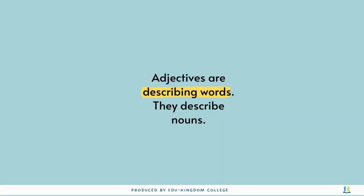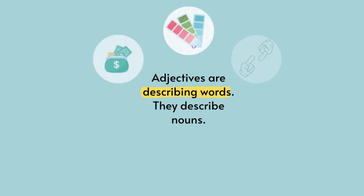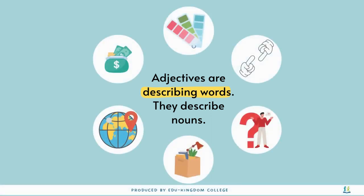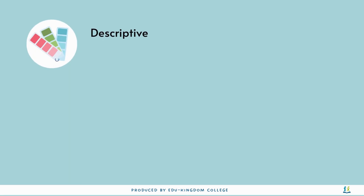Adjectives are describing words for nouns. They tell us a number of things: what the noun looks like, acts like, where it's from, or which specific object we are discussing. The most common type of adjective is descriptive.